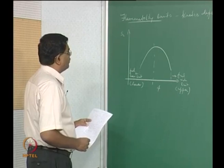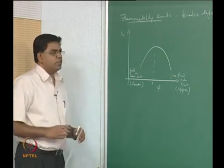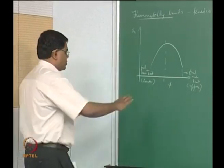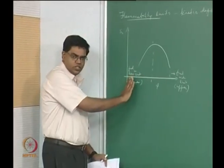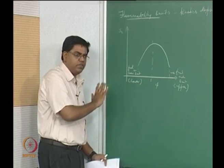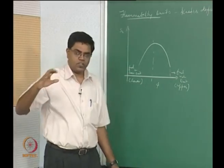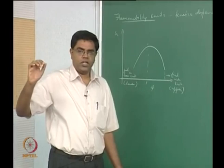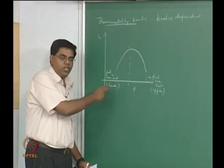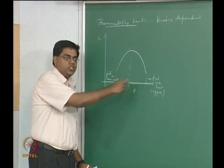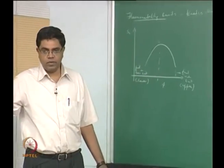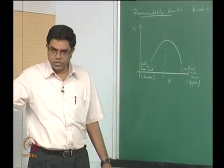We are interested in finding out what these limits depend on, and mostly what we are talking about is the mixture ratio. The control parameters in any premixed flame are the mixture ratio, the temperature, and the pressure. So the question here is: what does the lean limit mixture ratio or the rich limit mixture ratio depend on in terms of temperature and pressure?